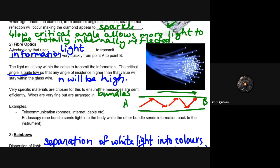That cable is a piece of plastic or fiberglass. And that critical angle needs to be quite low. So that way, the angle of incidence can be higher than the value that it will stay within the glass wire. So that n value of the fiber optic cable will be quite high. These very specific materials are chosen to ensure that these messages are sent without losing any information. And so the wires need to be arranged in fine bundles that allow for that total internal reflection to occur.